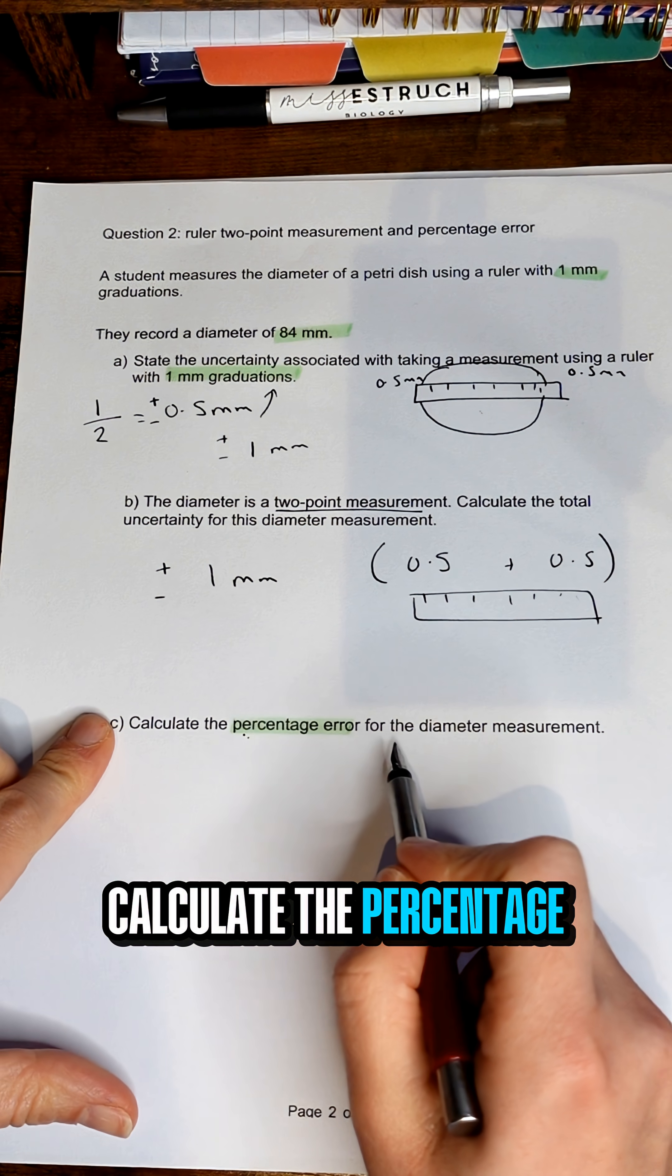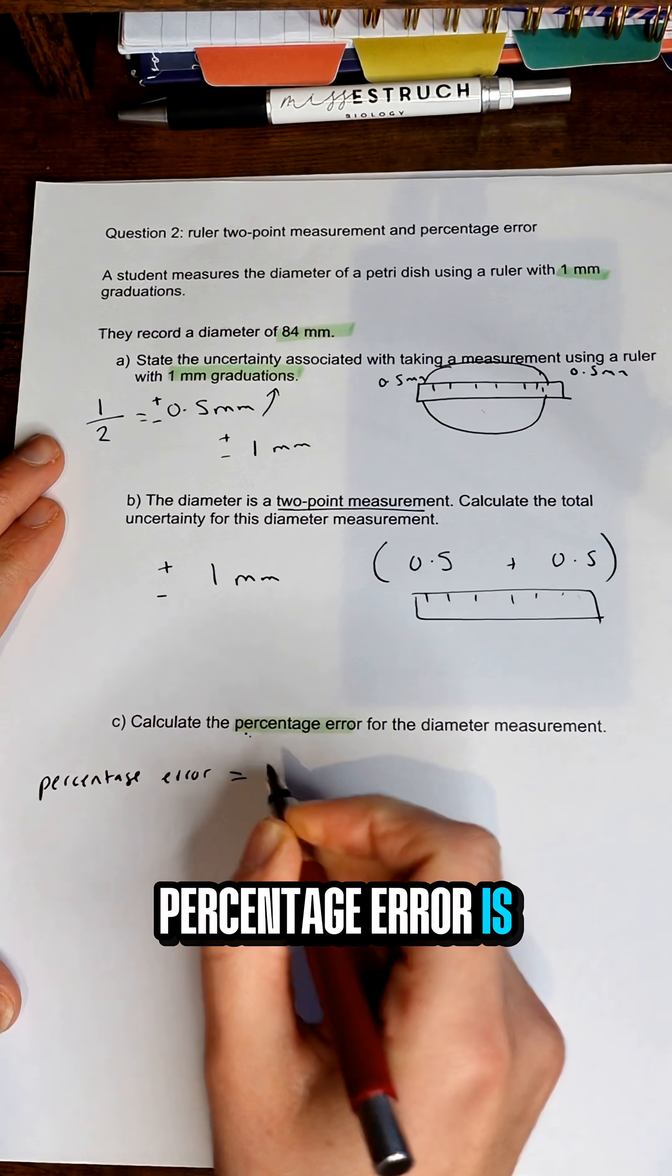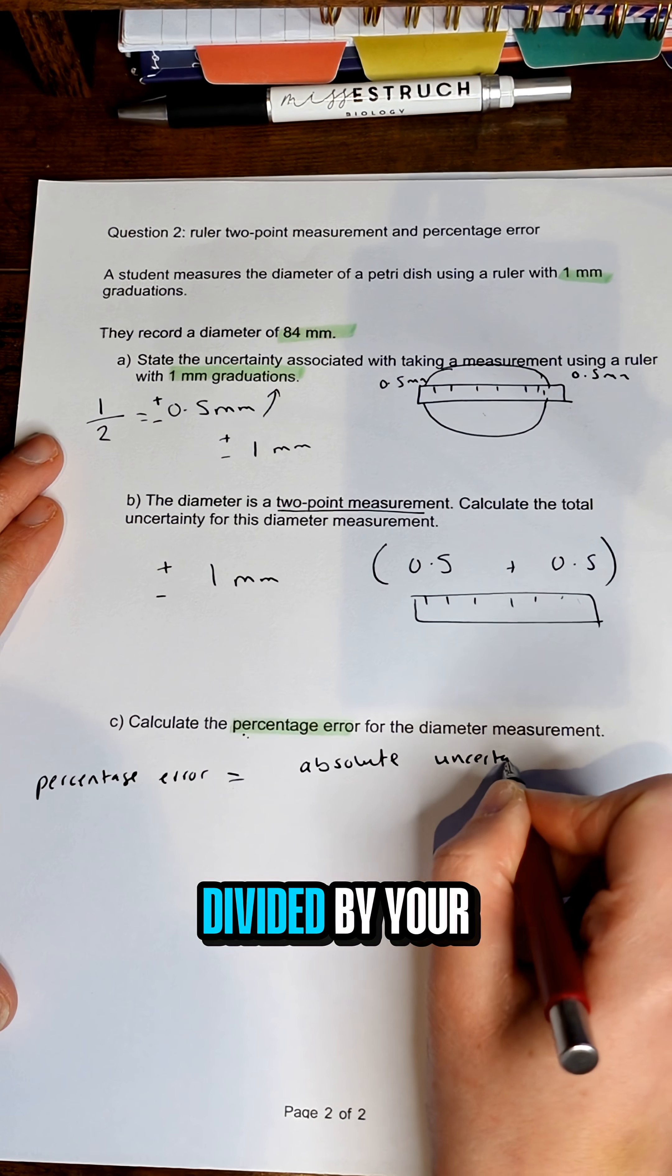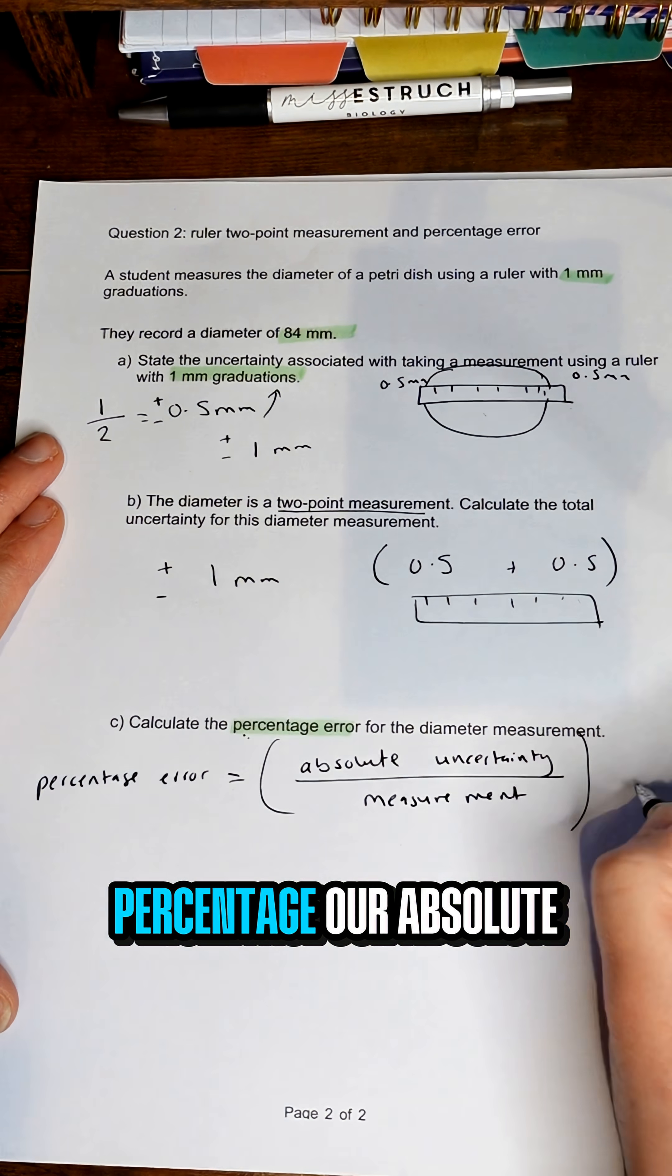So finally, calculate the percentage error for the diameter measurement. The percentage error is your absolute uncertainty divided by your measurement and then times 100 to make a percentage.